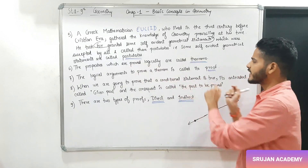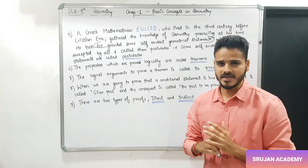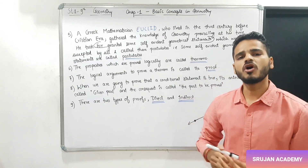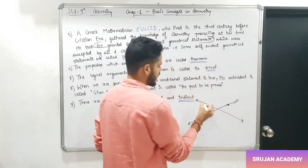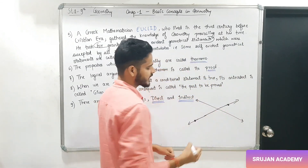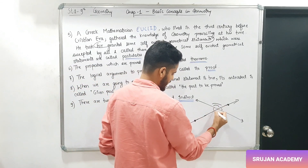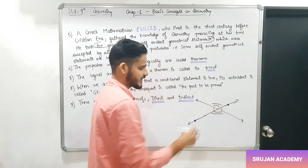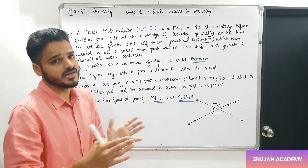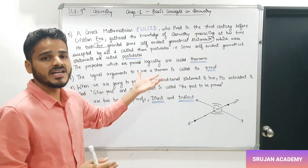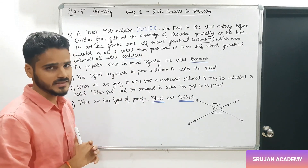Next है theorem. The properties which are proved logically are called theorems. कुछ ऐसे statements हैं जिनको हमें logically proof करना पड़ता है. जैसे जब दो lines एक दूसरी को intersect करती हैं, तो two pairs of opposite angles बनते हैं जो congruent होते हैं — यह हमको proof करके बताना पड़ता है. इसको हम theorem बोलते हैं. और logically proof करने में हम postulates यानि axioms की भी मदद लेते हैं.